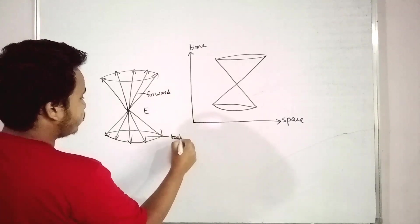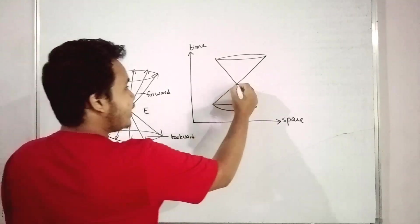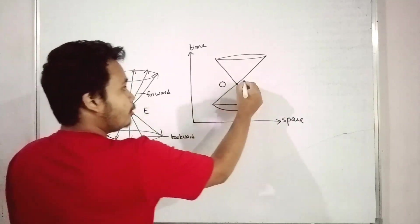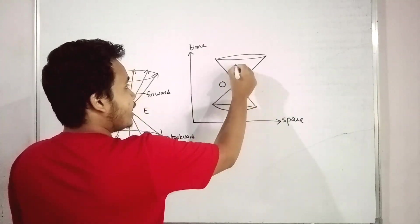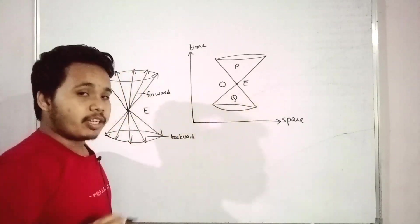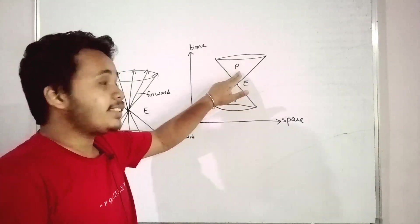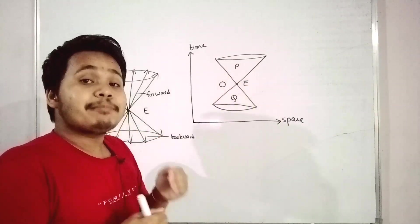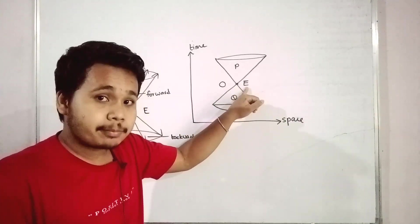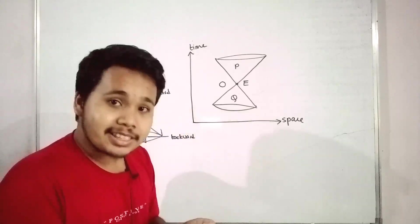Now if we consider three events: event E occurs at the origin O, event P is in the forward light cone, and event Q is in the backward light cone. Any event which occurs at P will be sometime later than the event at E. Relative to E, if we consider E as the present moment, then event P will be sometime in the future.